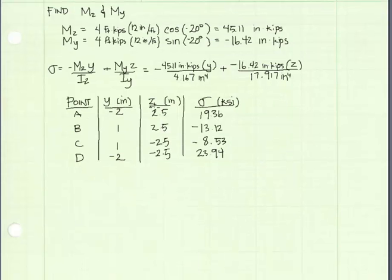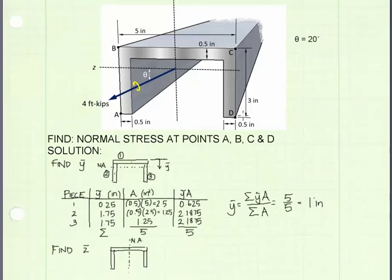Plugging in values for y and z into our equation, we can calculate the stress at the four points. We see that corner D has the highest tension stress and corner B has the largest compression stress. And here's D that has the highest tension stress.